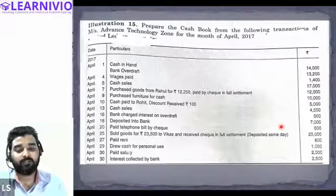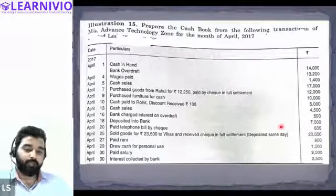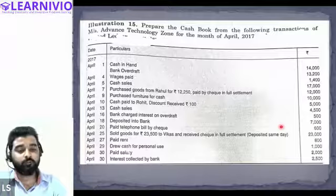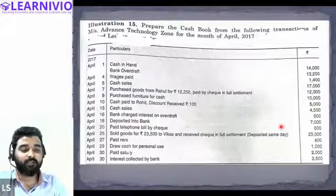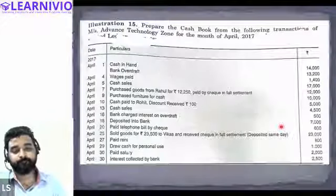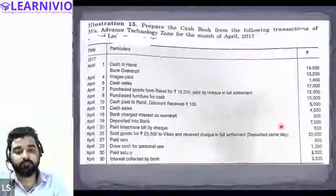On April 20th: paid telephone bill by cheque — By Telephone Bill on the credit side in the bank column. On April 25th: sold goods for 23,500 to Vikas, received a cheque in full settlement for 23,000, deposited the same day — To Sales Account on the debit side, in the bank column.